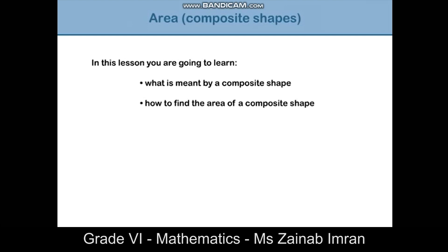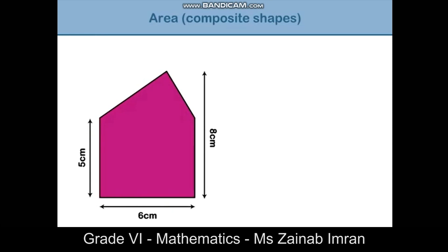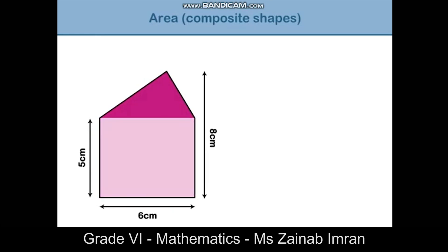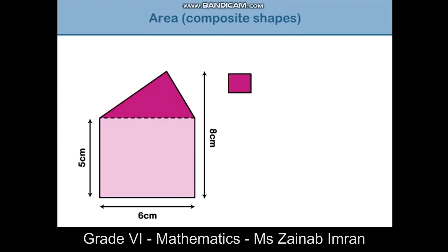Substitute the length and breadth into the formula, which gives us 6 times 5, which equals 30 centimeters squared. Next, find the area of the triangle. The formula for calculating the area of a triangle is: area equals half times base times height.